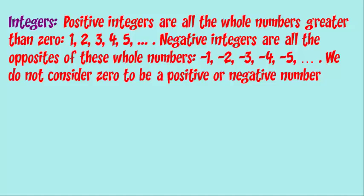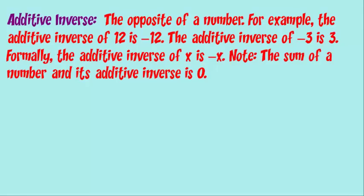We call zero a neutral number. The next term is the additive inverse. The additive inverse is the opposite of a number. For example, the additive inverse of 12 is negative 12. The additive inverse of negative three is three. Formally, the additive inverse of x, which is a variable, is negative x. The sum of a number and its additive inverse is always zero, and this is an important algebra concept to understand.